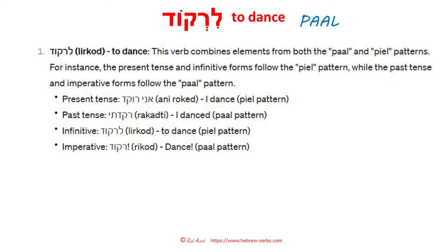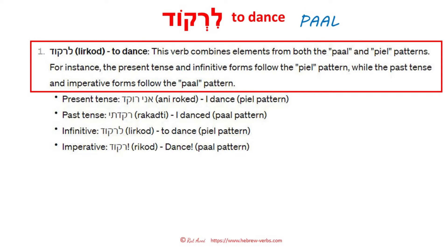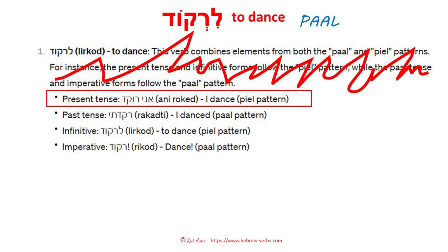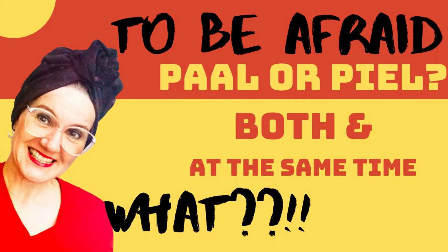And now what does ChatGPT really say? It says this verb combines elements from both the paal and piel patterns. For instance, the present tense and infinitive forms follow the piel pattern, while the past tense and imperative... Oh my god, sorry. I cannot even follow. This is such bogus. We just cut that out. Don't even read it to the end — it will confuse you. It is plain wrong. What else does it say? Present tense: ani roked, I dance — piel? Honey, this is paal. We are in paal. And one verb uses one pattern from the beginning to the end. The video we watched last week was the absolute exception. That's why I made it.